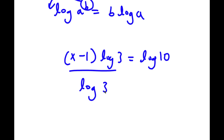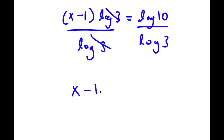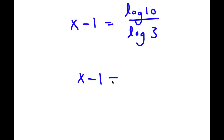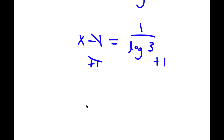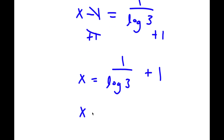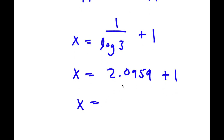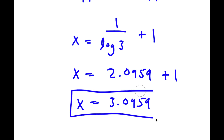Dividing both sides by log 3, I get x minus 1 equals log 10 over log 3. Now, log 10 is equal to 1, so x minus 1 equals 1 over log 3. Adding 1 to both sides gives x equals 1 over log 3 plus 1. And 1 over log 3 is approximately 2.0959. So 2.0959 plus 1 gives me 3.0959. So this is my answer.